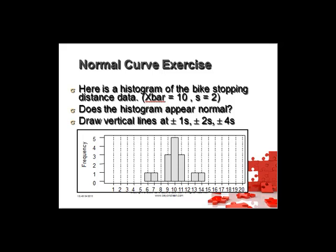Here's a normal curve exercise. Pause the video — below on the screen is a histogram of the bike's stopping distance data. Does the histogram appear normal? In your packs, print this off and draw the vertical lines at plus and minus 1, 2, and 4 standard deviations.